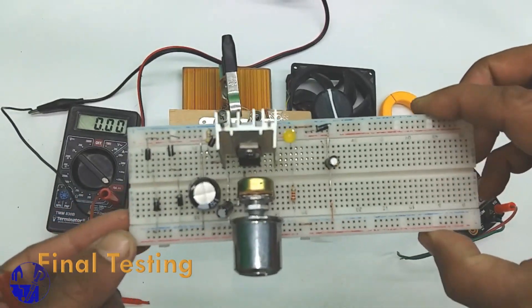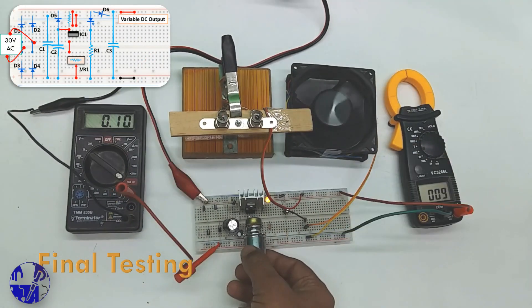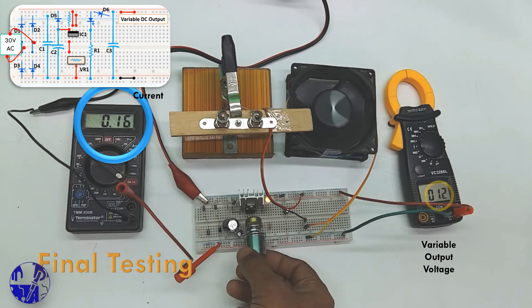Now it is time to test the variable power supply. Connect a suitable load, such as a bulb or a DC motor, for testing the power supply.